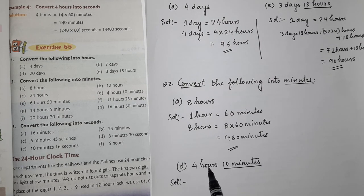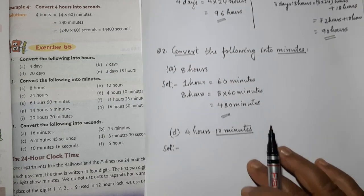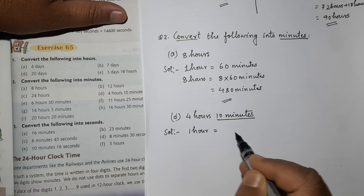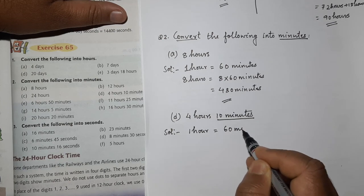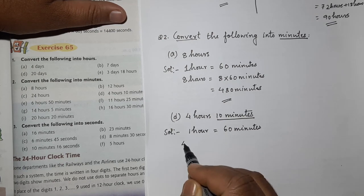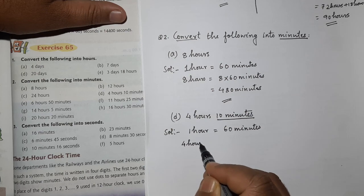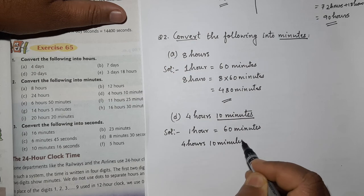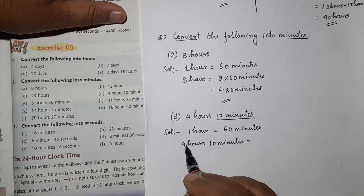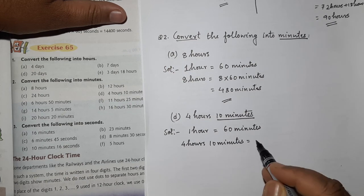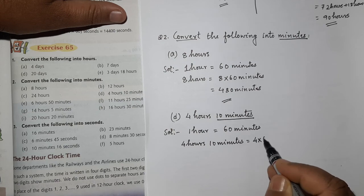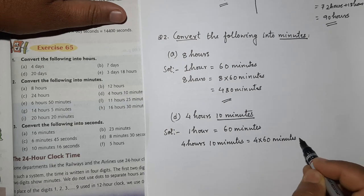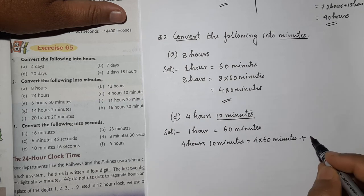I will convert only this 4 hours. We know in one hour, there are 60 minutes. So then 4 hours, 10 minutes. So we can write as 4 hours. Now I have to convert into minutes. That means 4 times 60 minutes. Plus this 10 minutes, we need to add.